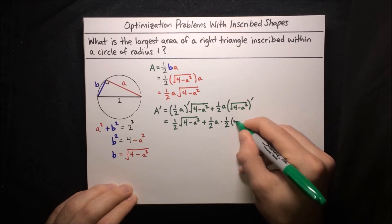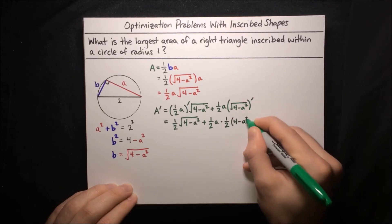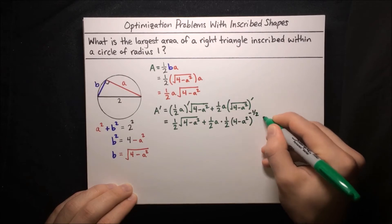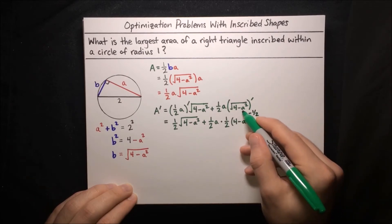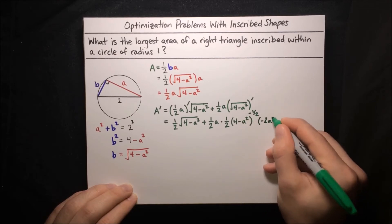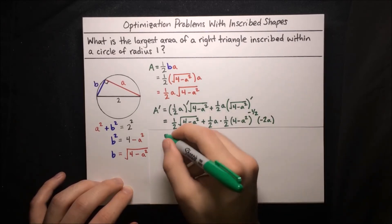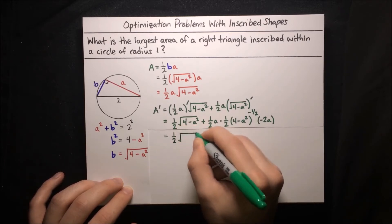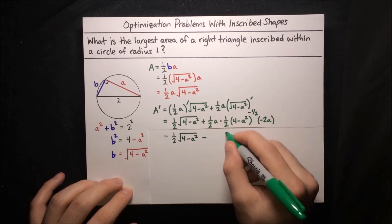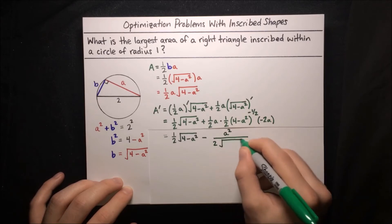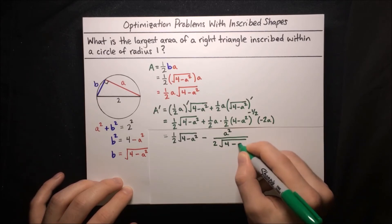We have 4 minus a squared to the power of negative one half, and then we apply the chain rule, multiplying by the derivative of the inside, which is negative 2a. Simplifying, this gives us one half times the square root of 4 minus a squared, minus a squared over 2 times the square root of 4 minus a squared.